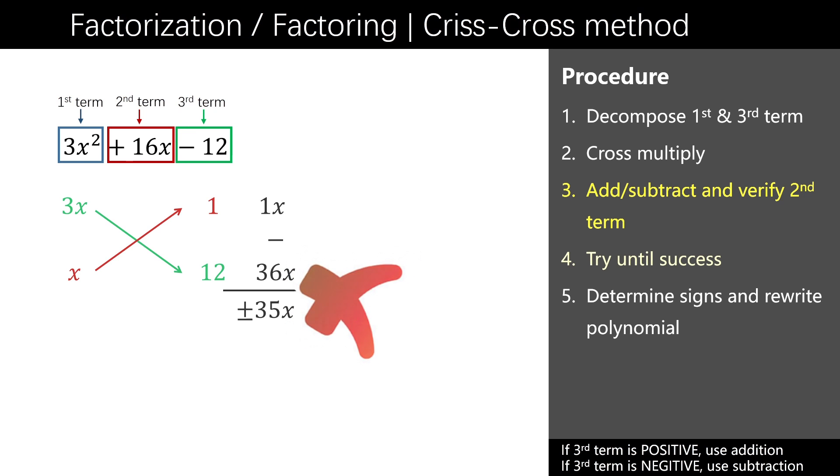3x squared equals 3x times x. 12 equals 2 times 6. Cross multiply and list the result on the right. As the third term is negative, subtract the result and get positive 16x or negative 16x. As the second term is positive 16x, it should be negative 2x and positive 18x. The signs go to the numbers on the left and the final answer is 3x minus 2 and x plus 6.